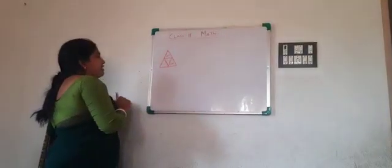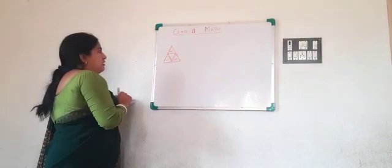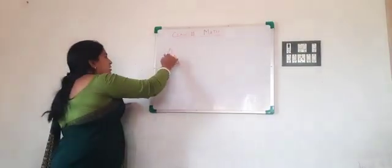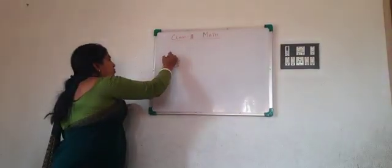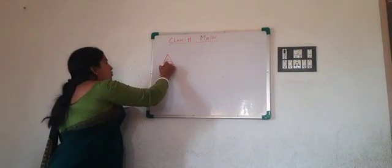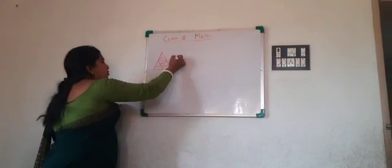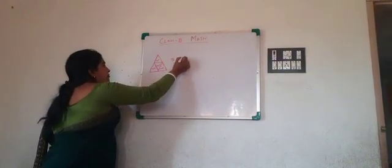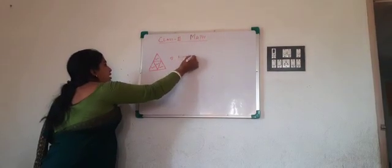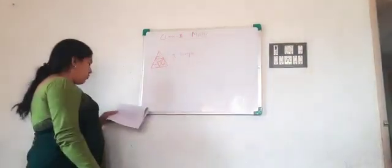So, how many triangles are there? One. Two. Three. Four. Five. So, total five triangles are there in the figure.